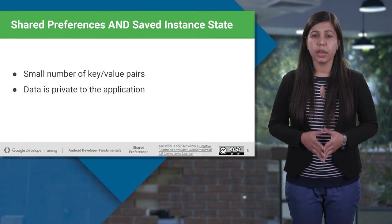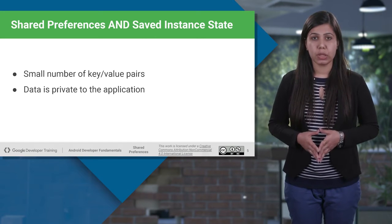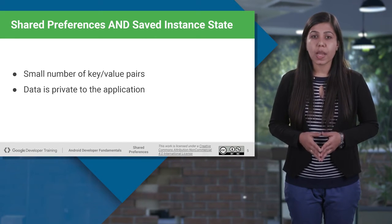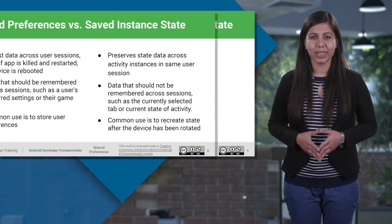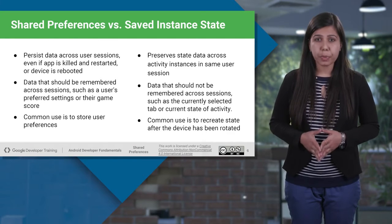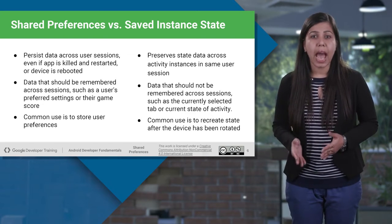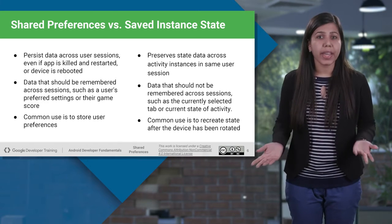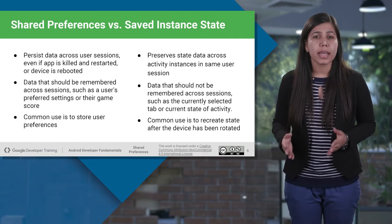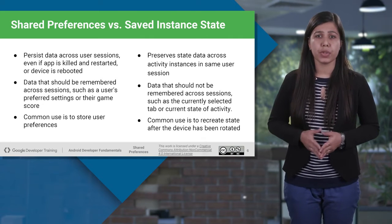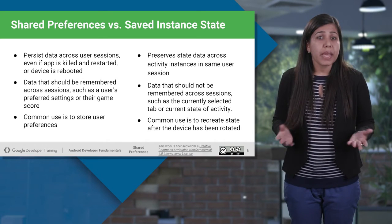These are small pieces of data stored as key-value pairs and kept private within the scope of the application. But Shared Preferences are different from the activity instance state you learned about in previous sessions. Data in Shared Preferences will be persistent even if the user closes the application, if apps get killed and restarted, or if the device is rebooted. Shared Preferences values will persist across user sessions — these are the things you would use to store settings that a user would set.